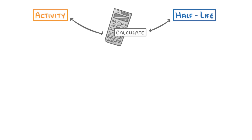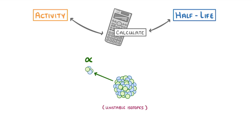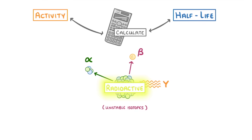We've already seen that some materials contain unstable isotopes, and that in order to become more stable, they can decay by emitting some form of radiation, like an alpha particle, a beta particle, or gamma rays. We call materials like this radioactive, and they come in loads of different forms.